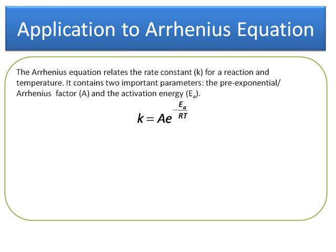Usually as we increase the temperature of a reaction, the rate constant increases. The equation has two parameters: the pre-exponential or Arrhenius factor A, and the activation energy Ea, a very important parameter in physical chemistry. Activation energy is the minimum amount of energy a reaction needs to proceed.